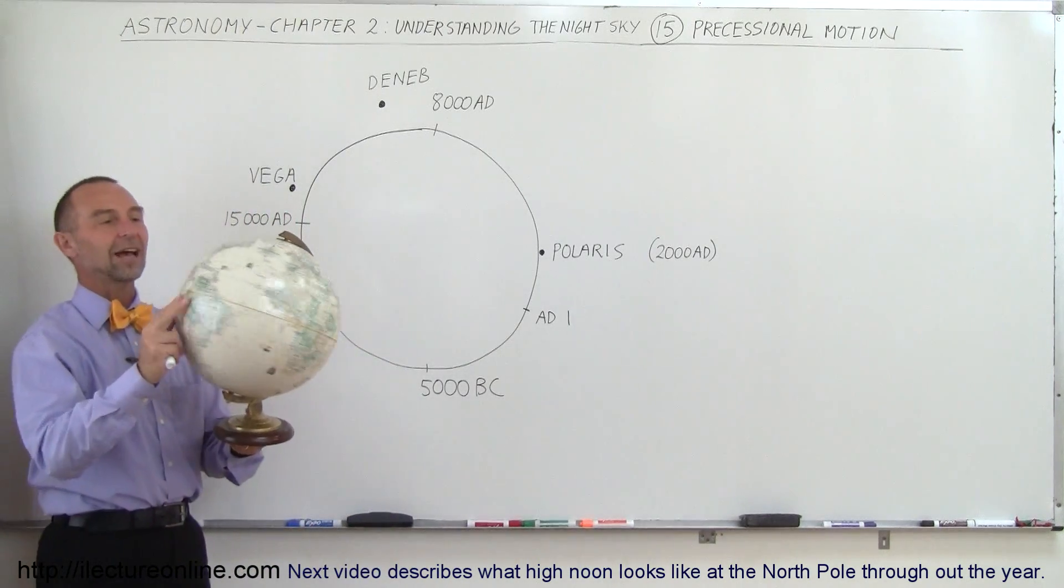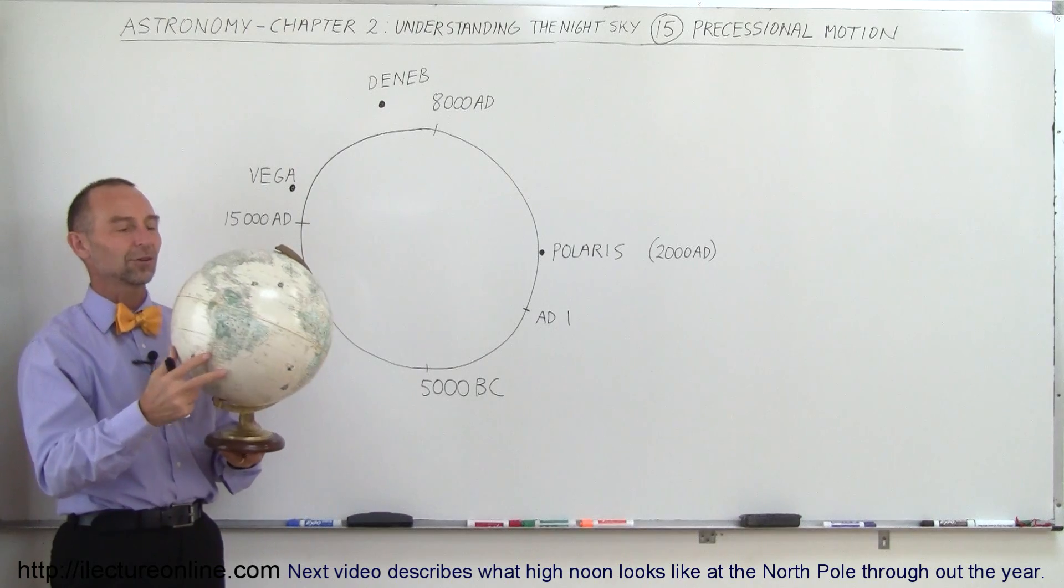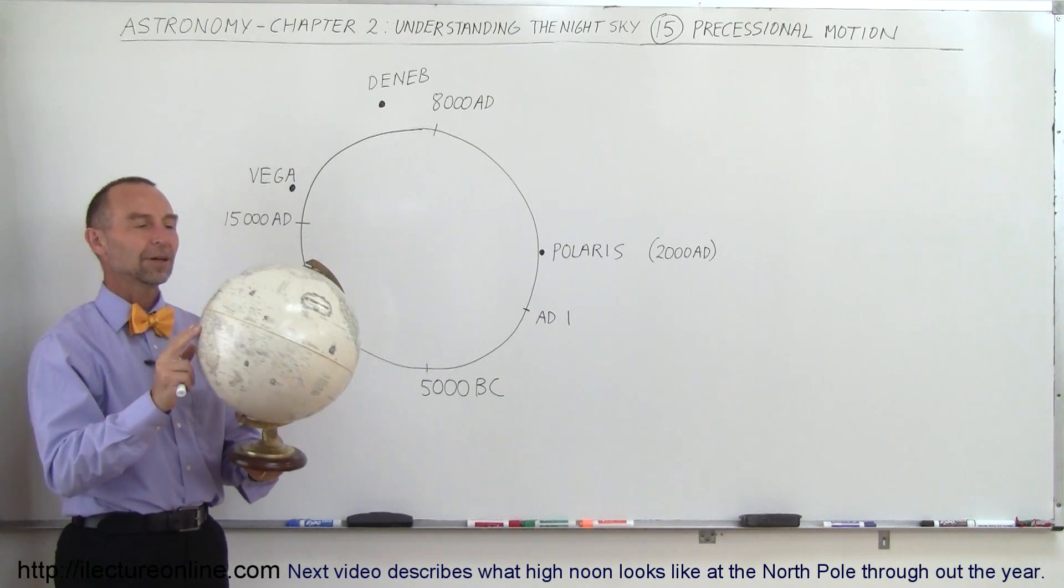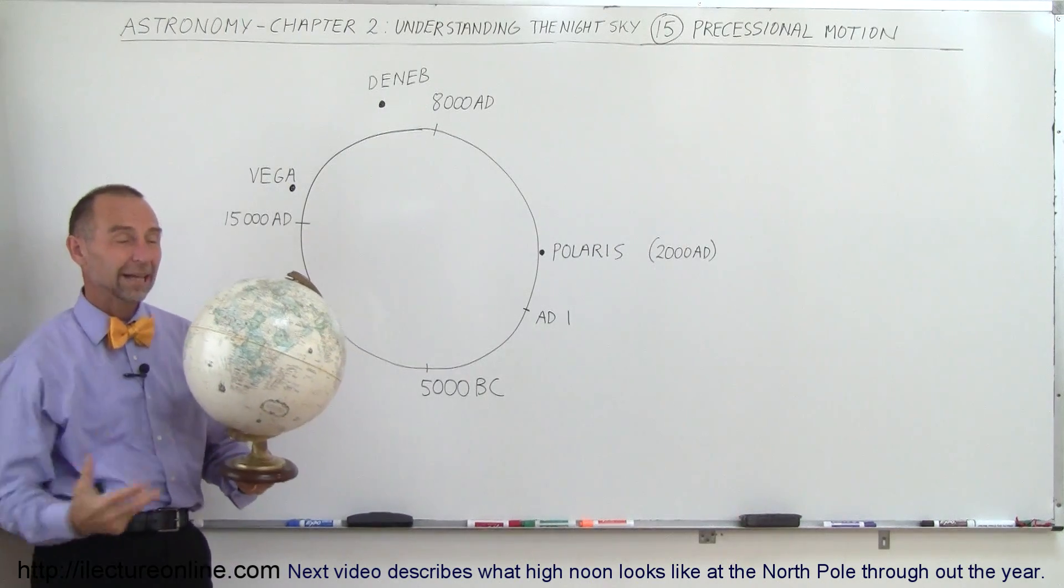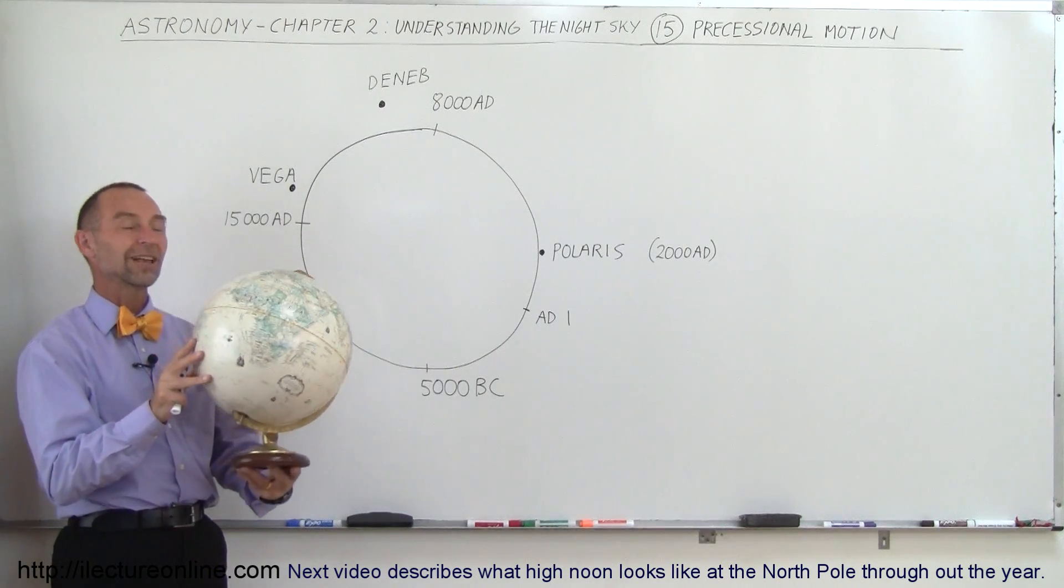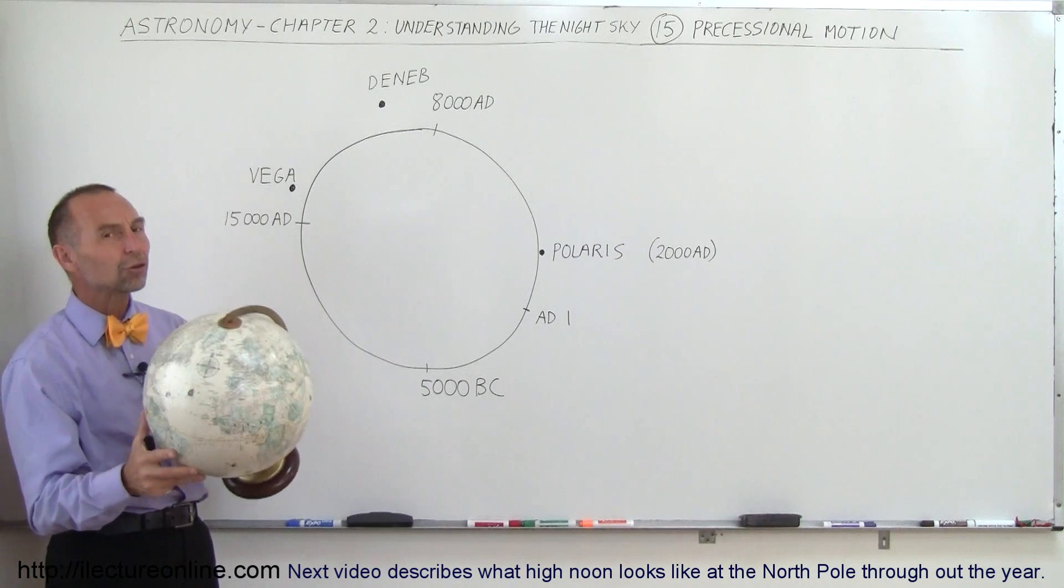So the Earth spins on its axis once every 24 hours, and I need a little oil on that one. But because of that rotational motion and the gravitational pull of the Sun and the Moon, the Earth tends to wobble. That's a very slow wobble.